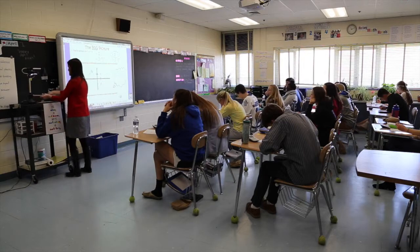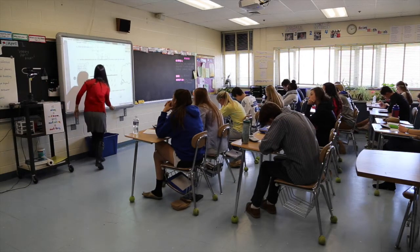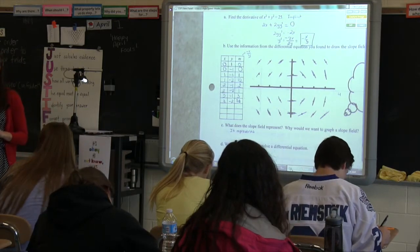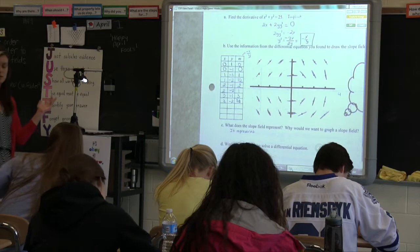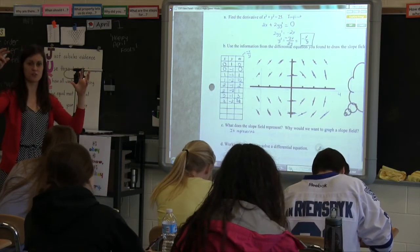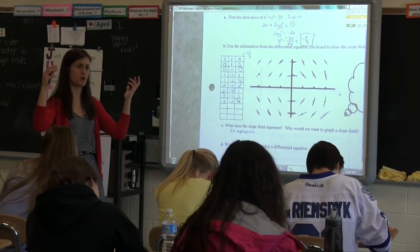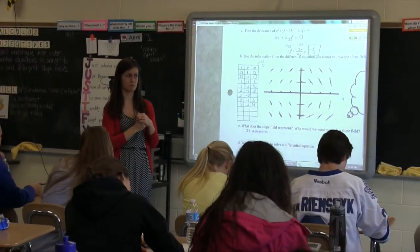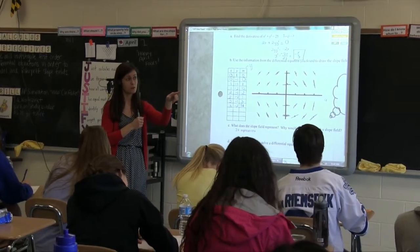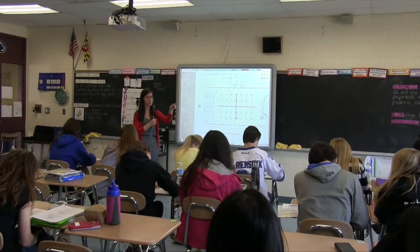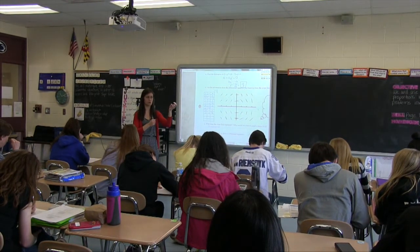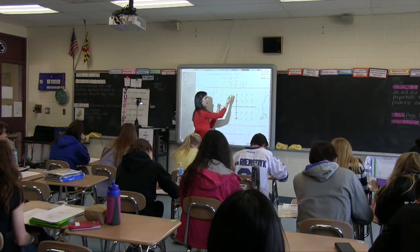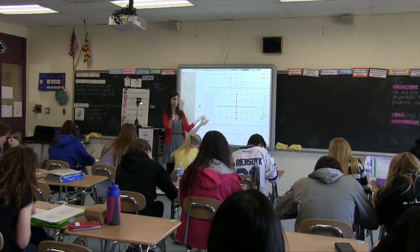Are you ready to see Jessica's work? This is the completed slope field. What do you notice? Can somebody raise your hand and tell me? It makes concentric circles! Does anybody know why it makes circles? Because we took the derivative of the equation of a circle — x squared plus y squared equals 25. Isn't that the equation of a circle? This slope field represents a circle.